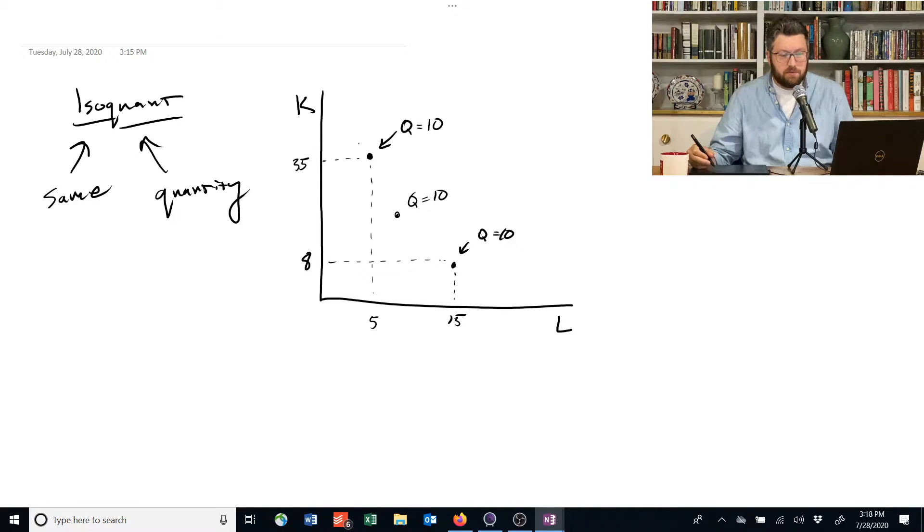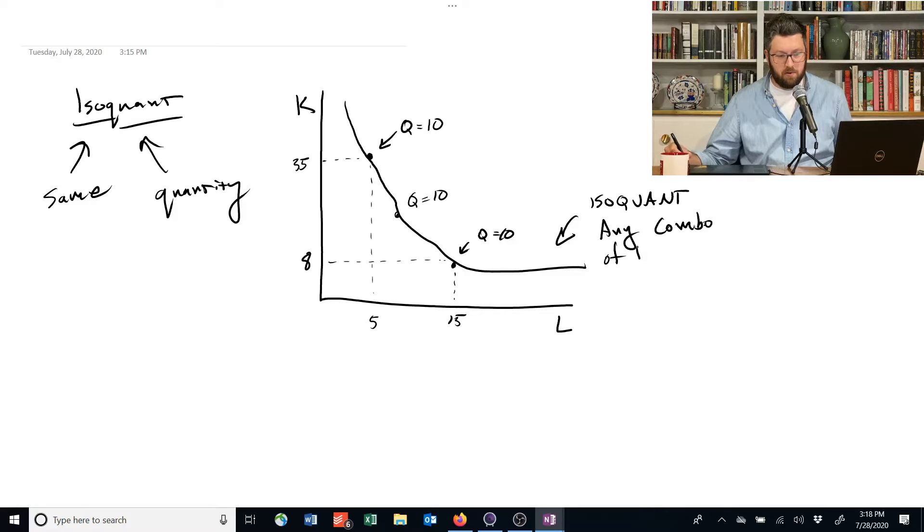And in fact, we're going to make the leap to assuming that there's actually tons of different ways. And we are able to connect them all together in a line, and this line is called an iso-quant. And any combination of capital and labor on the iso-quant produces the same amount of quant, the same output, same Q. In this case, Q equal to 10.